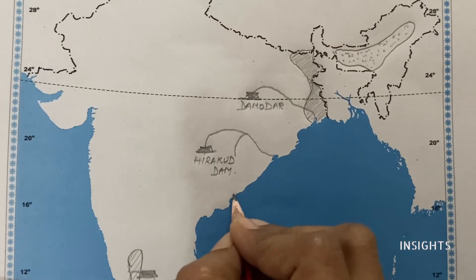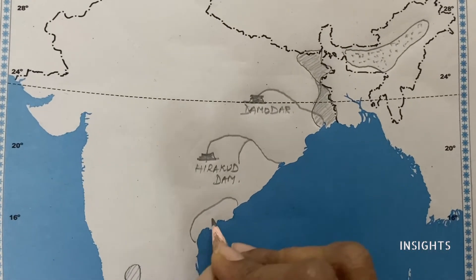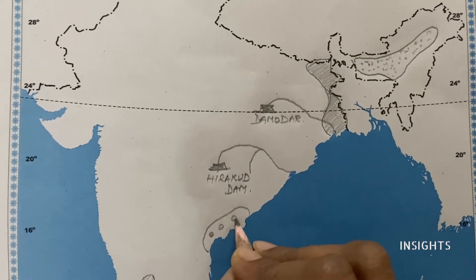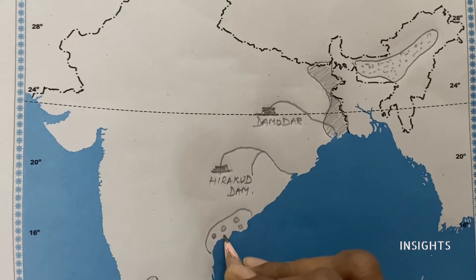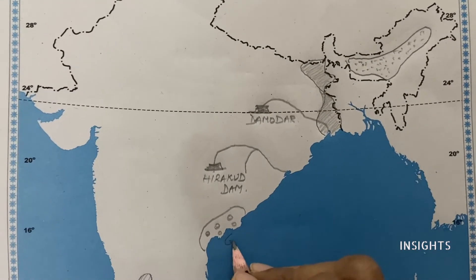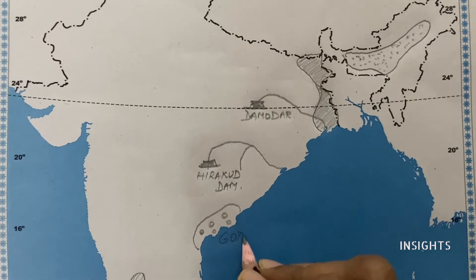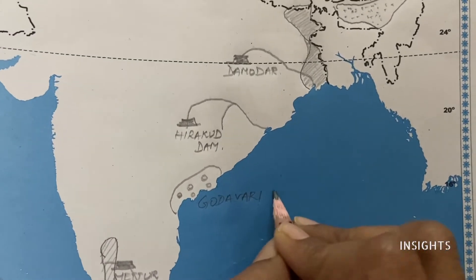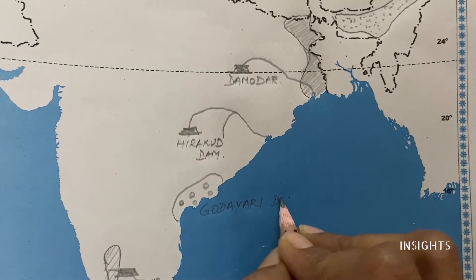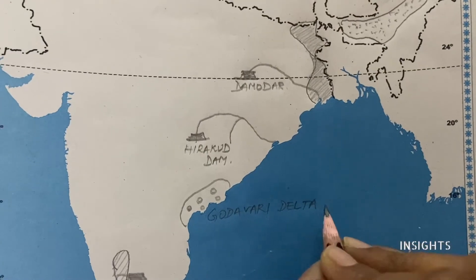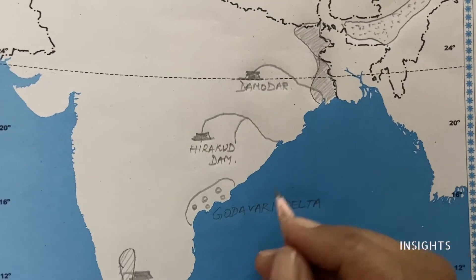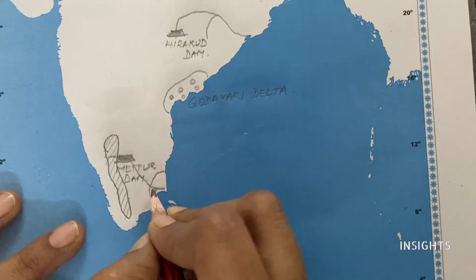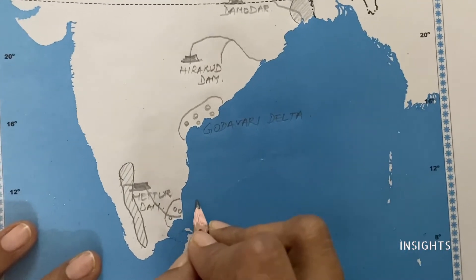Apart from those, we have the deltas of Godavari and Kaveri — these are paddy-growing areas. Let's mark the Godavari delta and then the Kaveri delta. The key symbol should be the same for both delta regions.